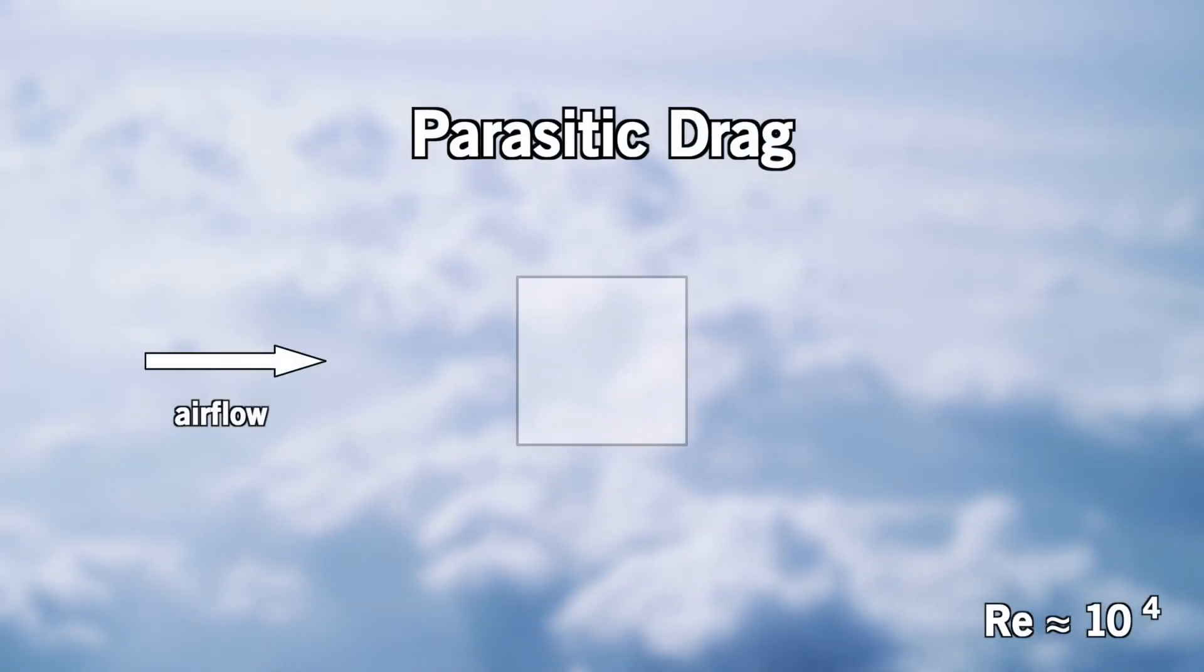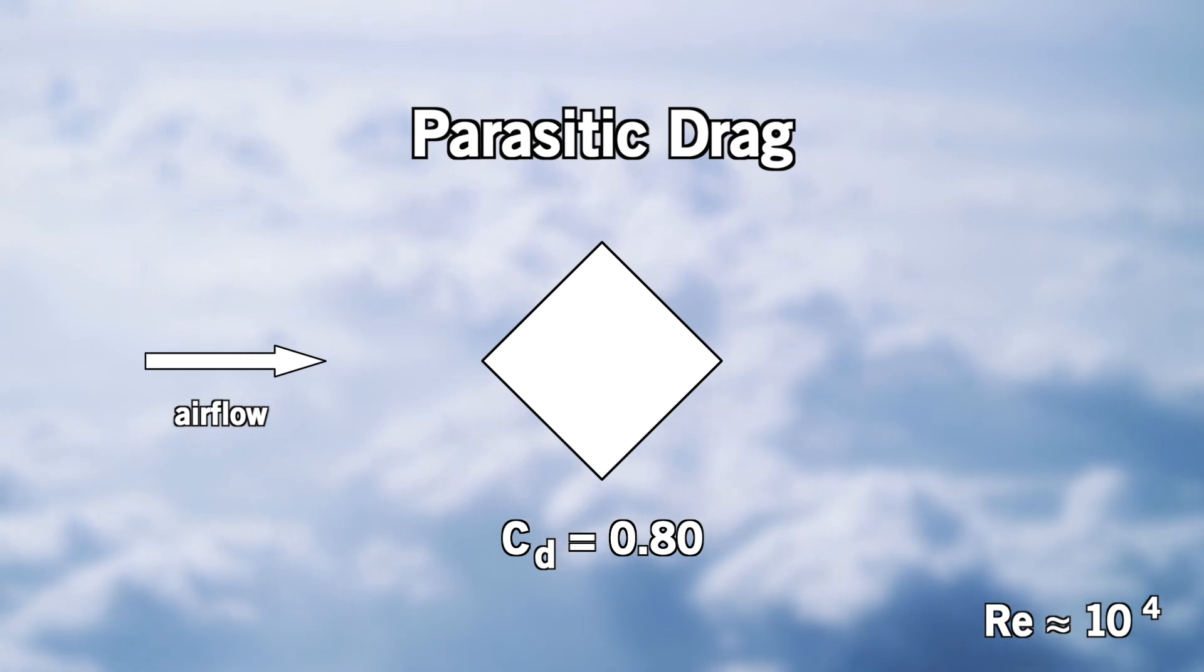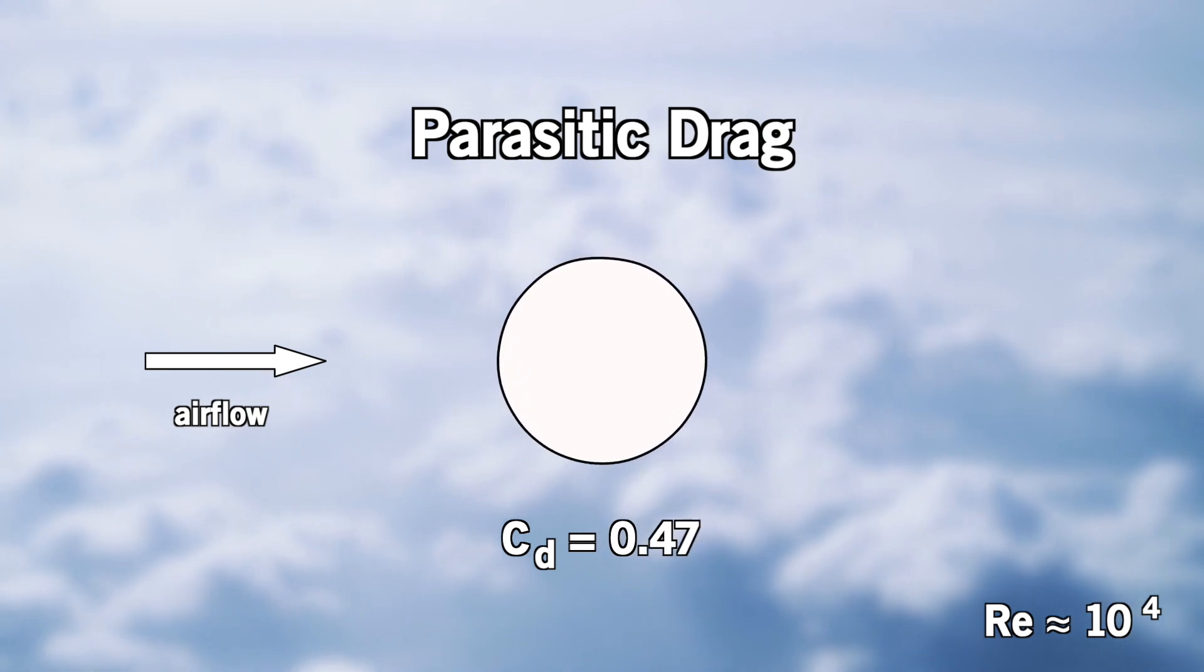In two dimensions, for example, a square has a drag coefficient of 1.05. If we rotate the square 45 degrees so that the corner faces the wind, the coefficient decreases to 0.8, almost 20% less. If we turn it into a circle, then it decreases to almost half.